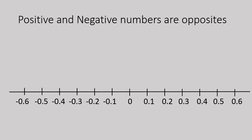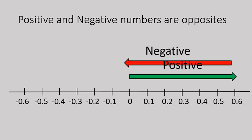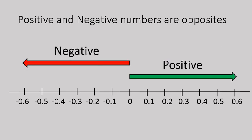Positive and negative numbers are opposites. Positive numbers on a number line would move from left to right. Negative numbers would be moving towards the left.